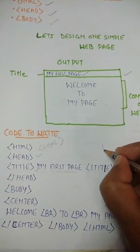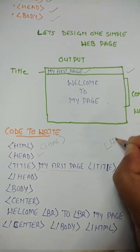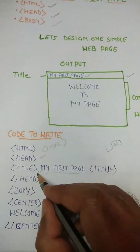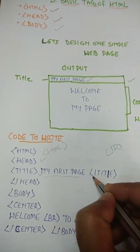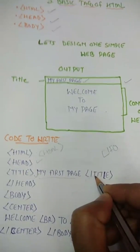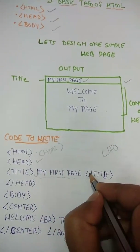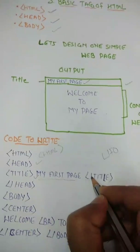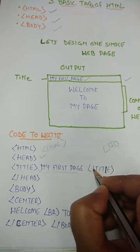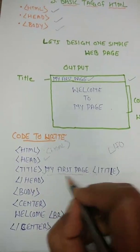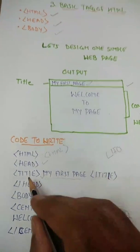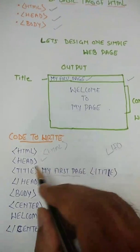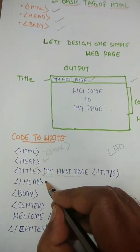We are using the LIFO method — last in, first out — meaning the tag whose work is over must be closed immediately. The title tag is a container tag because it has an opening and a closing tag; you can identify this because it carries information in between. So once the title work is done, we close the title tag immediately, and then close the head tag.